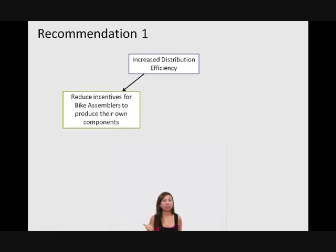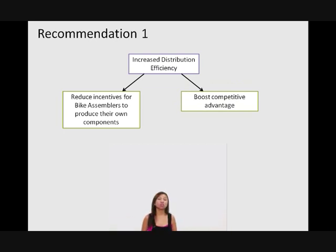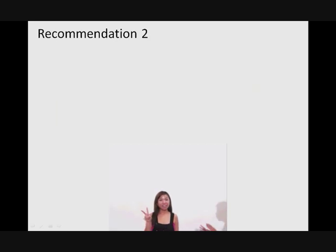The increase in the distribution efficiency should, one, reduce the incentive for the bike assemblers to venture into producing their own components in hope to reduce their lead time. And two, they should further boost our competitive advantage over the other component manufacturers.